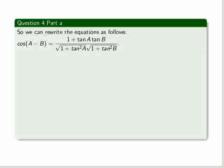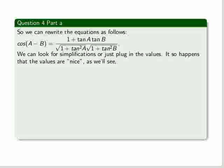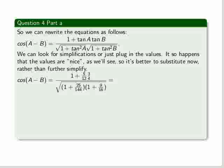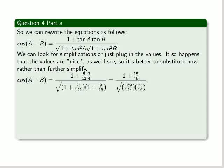And we do that, so there we get the denominator coming out as 1 plus tan squared A and 1 plus tan squared B, the square root of those. Now we can look for simplifications here, try to make that equation friendlier, or just plug in the values that we have. It so happens that the values are nice, as we'll see, so it's better to substitute now rather than further simplify. So we plug in the values where tan A equals 5 over 12 and tan B equals 3 over 4. On the denominator, obviously, we have to square those, and then we're going to have to add 1 to the tan A and tan B on the denominator. So we get that equation.